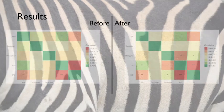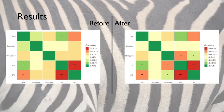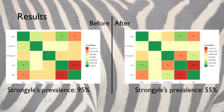Our results show that the more dominant an individual is, the older it is and the lower its contamination risk through social behaviors. Strongyle prevalence is about 95% before treatment and 55% three months after treatment. One zebra, the most subordinate, showed no significant difference in parasite burden before and after treatment and was individually treated later.